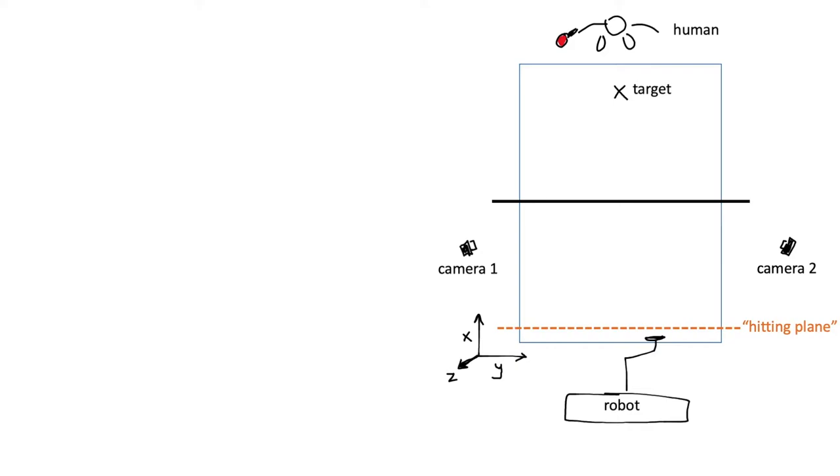Another simplification comes in the form of a hitting plane. They require that the robot contacts the ball wherever the ball intersects this plane, so effectively always hitting the ball at a fixed X position. This simplifies things because it doesn't worry about whether to move forwards towards the net or back away from the table to hit the ball.